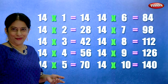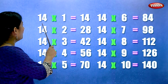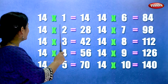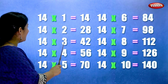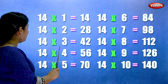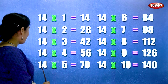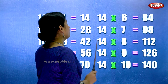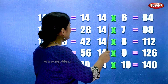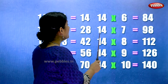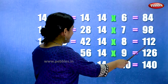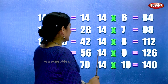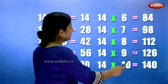Let's learn the table of fourteen one more time. Fourteen ones are fourteen. Fourteen twos are twenty-eight. Fourteen threes are forty-two. Fourteen fours are fifty-six. Fourteen fives are seventy. Fourteen sixes are eighty-four. Fourteen sevens are ninety-eight. Fourteen eights are hundred and twelve. Fourteen nines are hundred and twenty-six. Fourteen tens are hundred and forty.